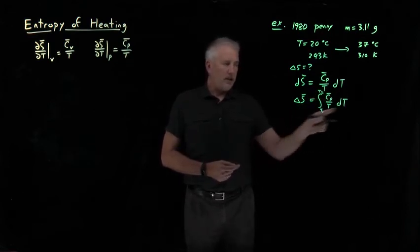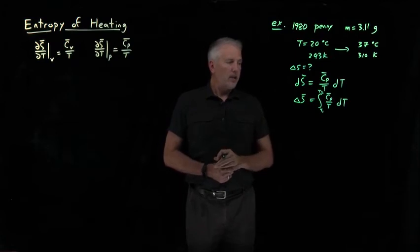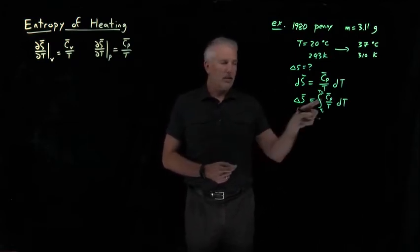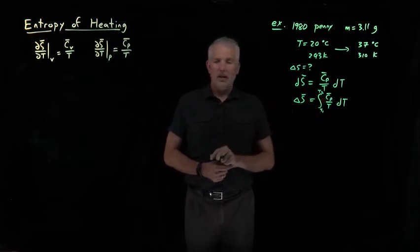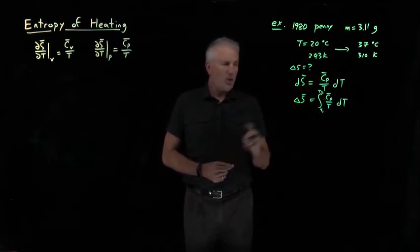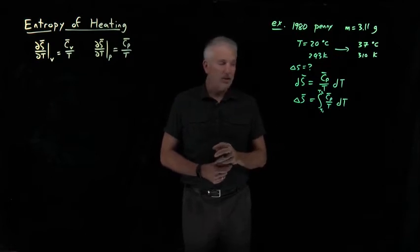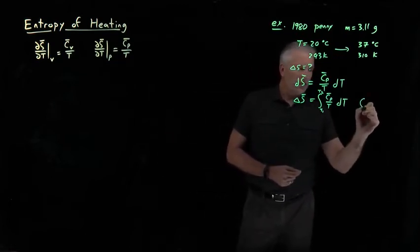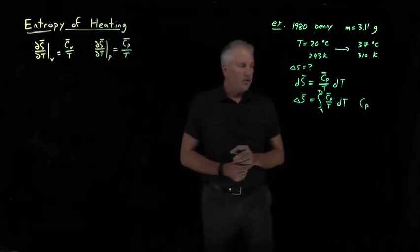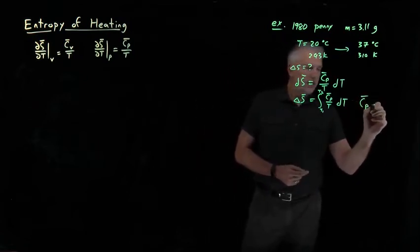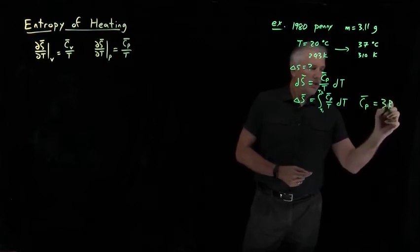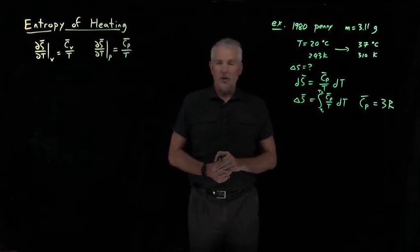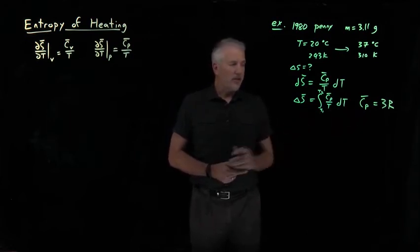So the thing on the right-hand side is what I need to evaluate for my particular penny. So I need to know what is the heat capacity, the constant pressure heat capacity of a copper penny. Well, copper is a monatomic metal, so we know what the heat capacities of monatomic metals are, or at least according to the Equipartition Theorem or according to Dulong and Petit. So the constant pressure heat capacity of a solid like copper is 3R or should be close to 3R.